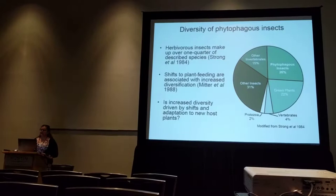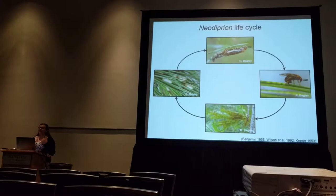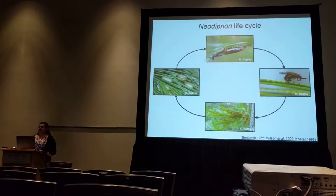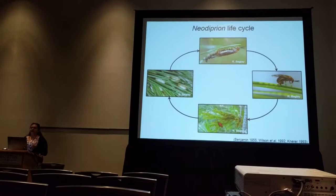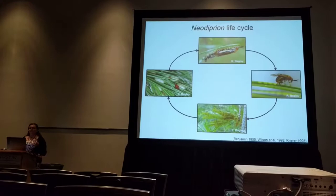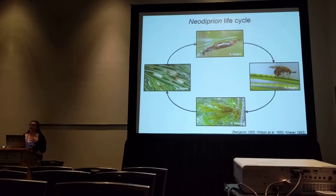One hypothesis that's gained steam in recent years is that shifts and subsequent adaptation to new host plants actually promotes insect speciation. One taxa in which this host-driven speciation has been long suspected to occur are Neodiprian sawflies. These guys have a pretty typical insect life cycle. The females and males will mate on the host plant, and the female will lay her eggs inside the tissue of their pine tree hosts. The larvae will then hatch and feed on the needles, spin up cocoons on the host material or in the soil. This tight association with their host plant is thought to facilitate the process of host-driven speciation.